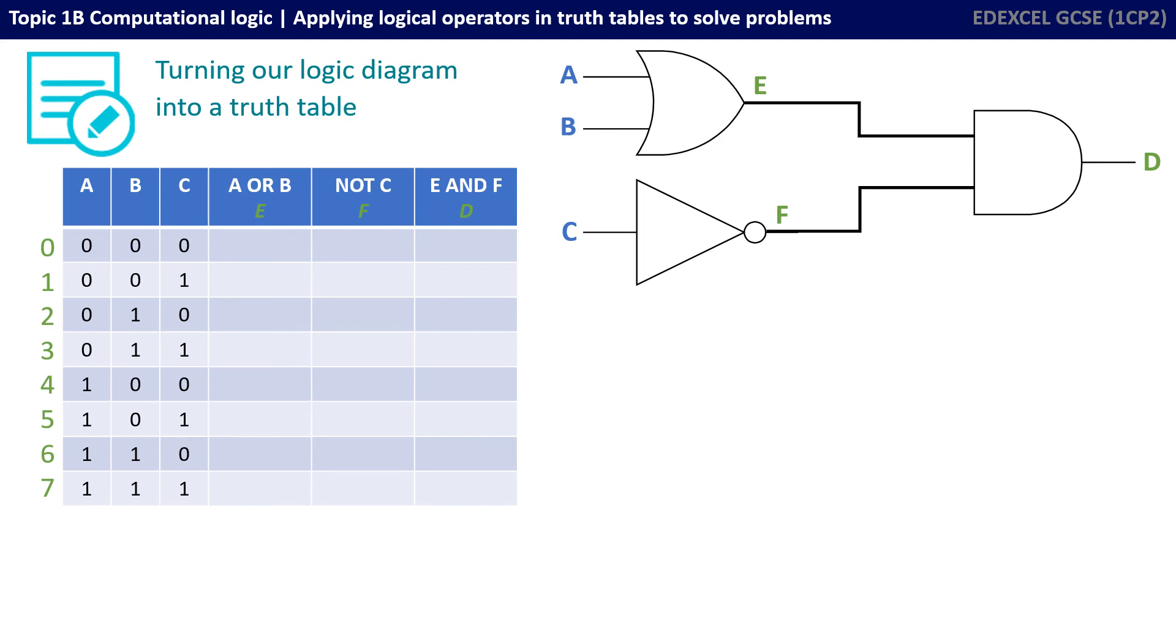We can be sure we've got every possible combination of three inputs there because we've gone from three zeros to three ones.